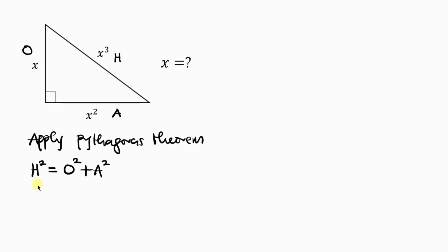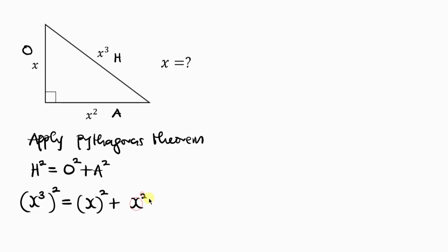This is a very simple theorem. Let's substitute our values from the diagram. Our hypotenuse is X cubed, so I'm going to be putting X cubed here and squaring that according to Pythagoras, equal to the opposite squared plus the adjacent, which we have as X squared — and I'm also going to square that. Now this can become X to the power of 6, because from indices the powers multiply: 3 times 2 gives 6.